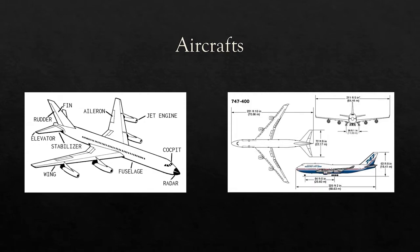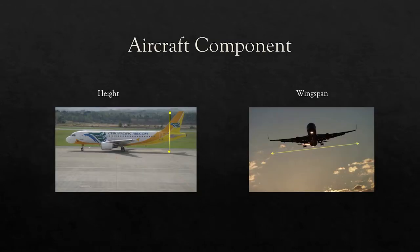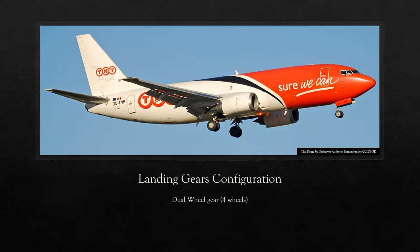Here are the different components of the aircraft. We have the maximum height, and we have the wingspan — that is from one side of the wing to the other side. Now let's go to the landing gear configuration.